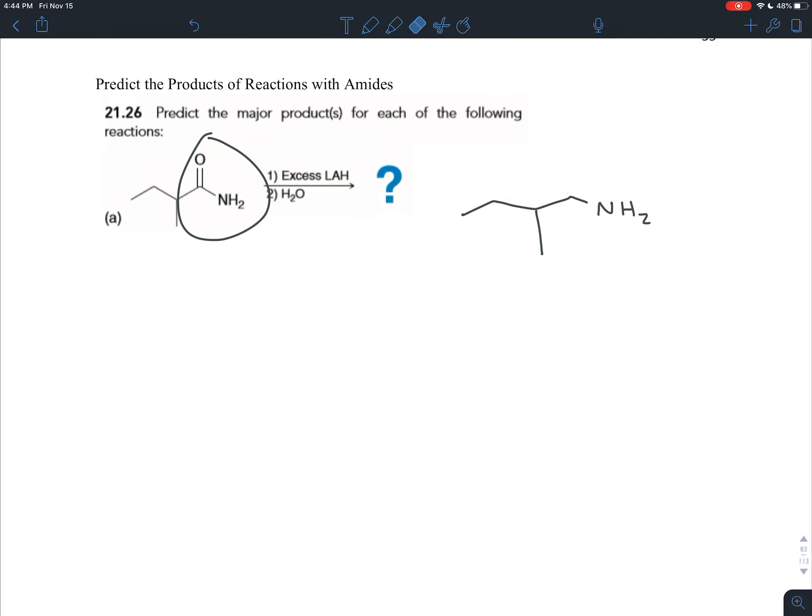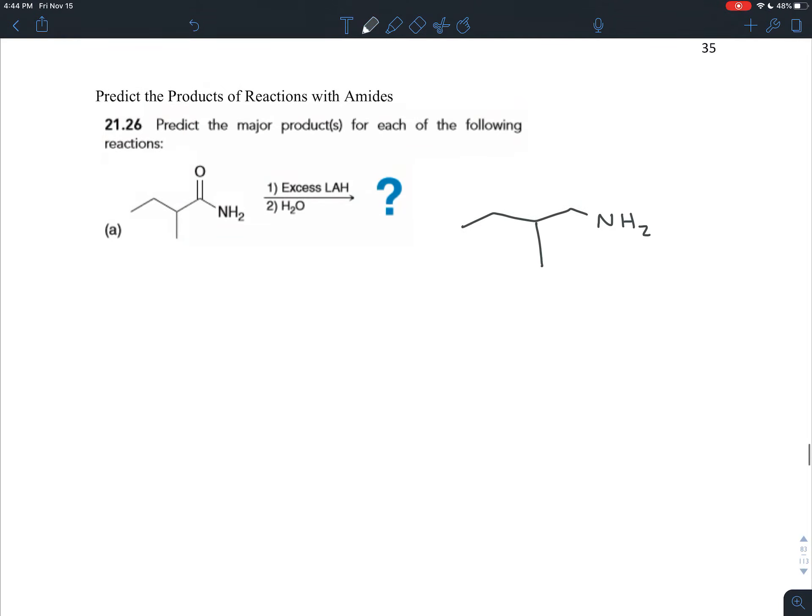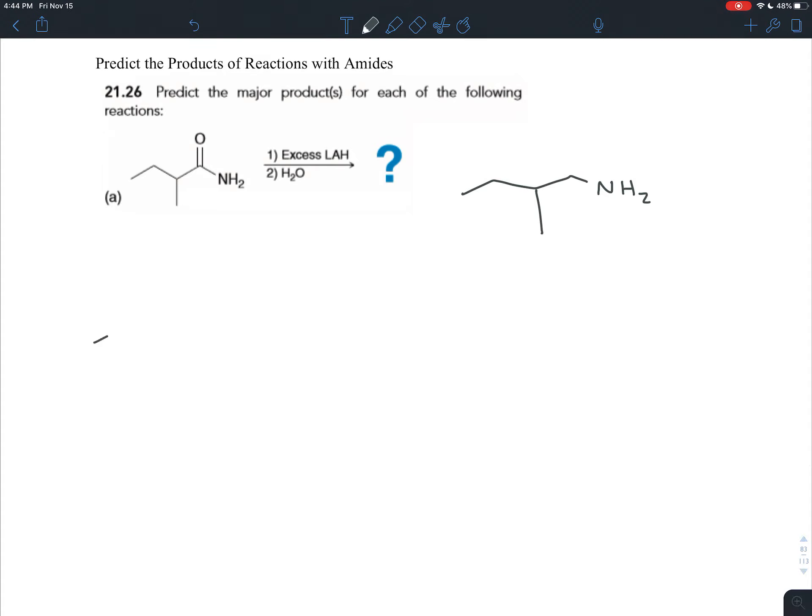But how does that happen? That's all you have to know for the synthesis. That if you take an amide and treat it with excess lithium aluminum hydride followed by water, you get an amine. But how does that happen? How would you remember that? How would you make it easier to remember that by understanding it?